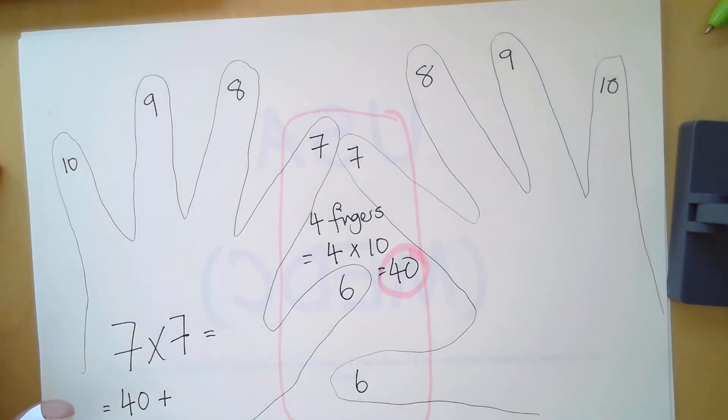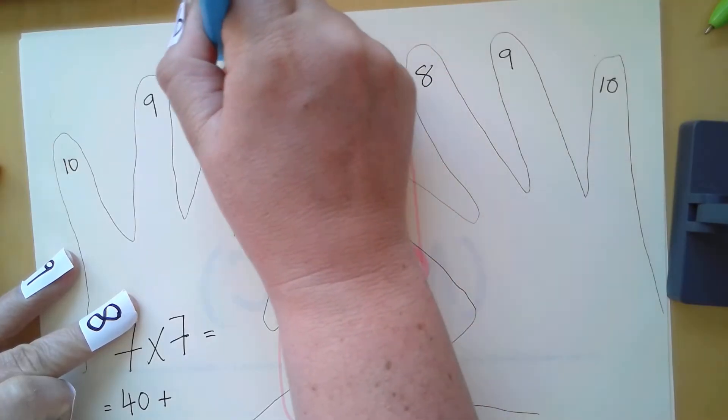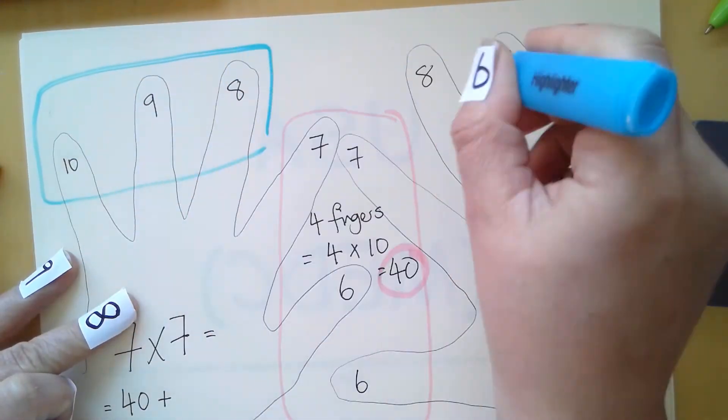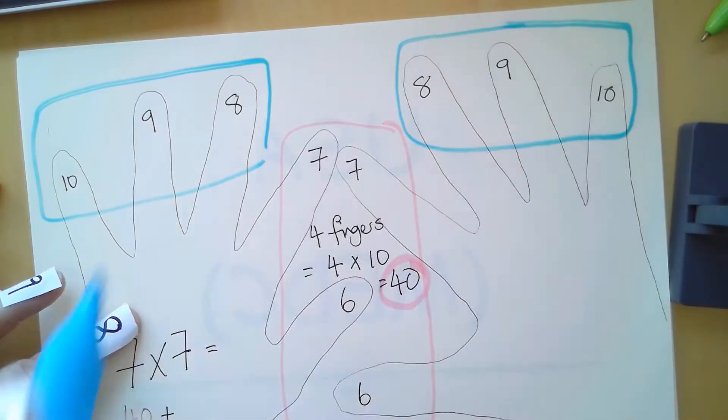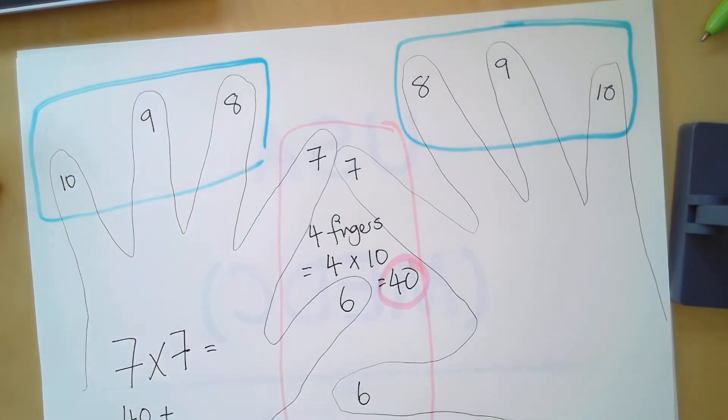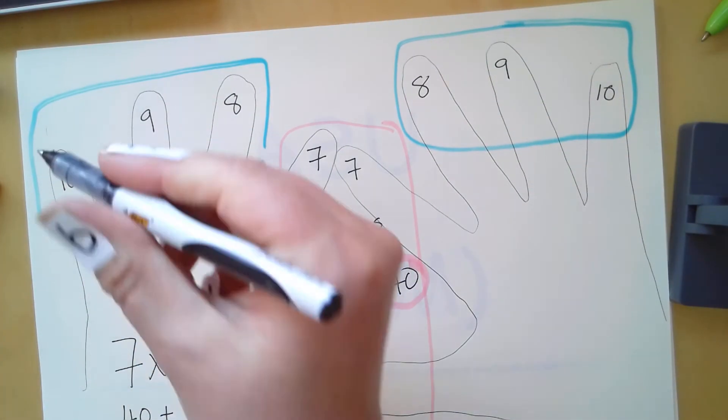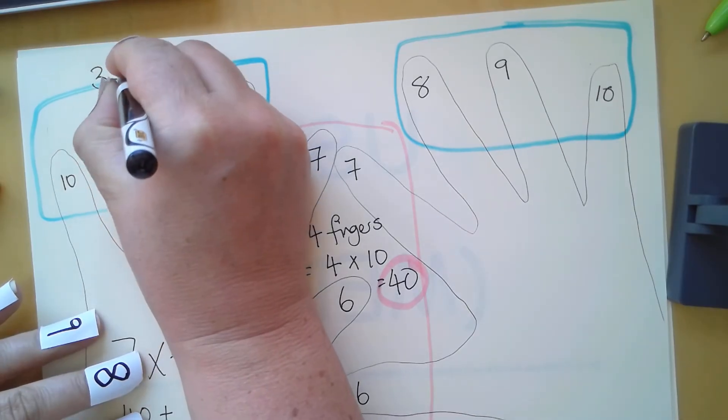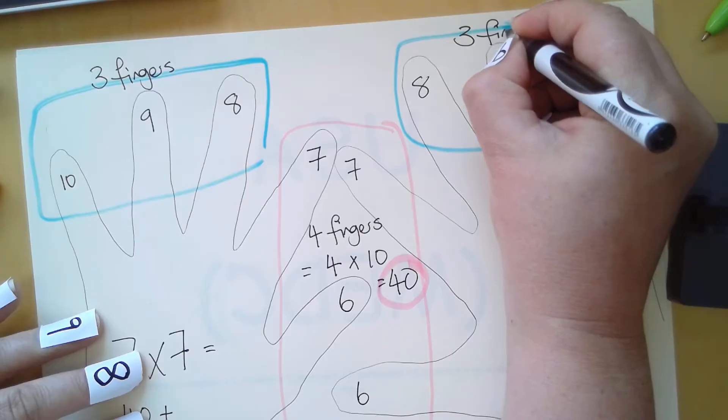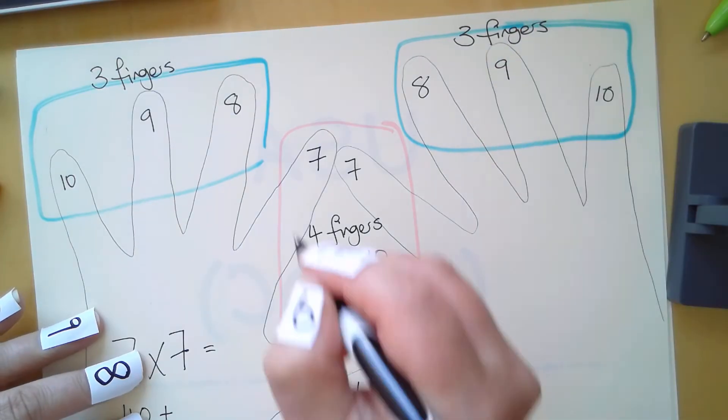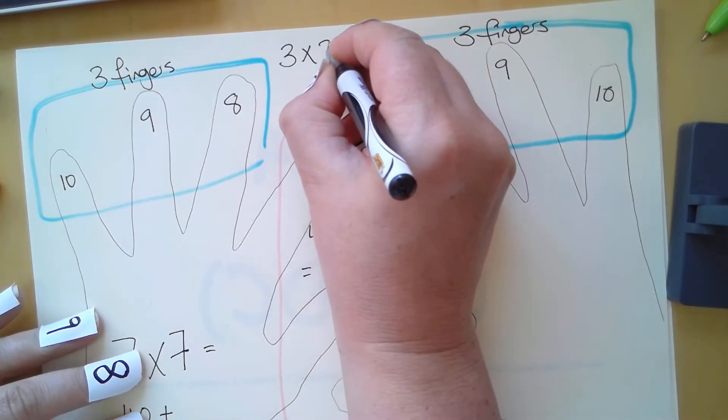Let's demonstrate that as well and draw this on our diagram. I have three fingers and three fingers. Three multiplied by three.